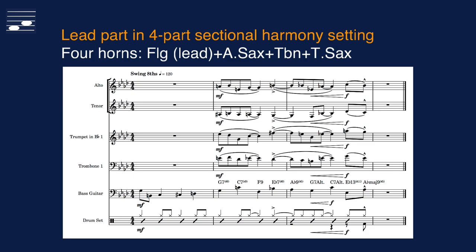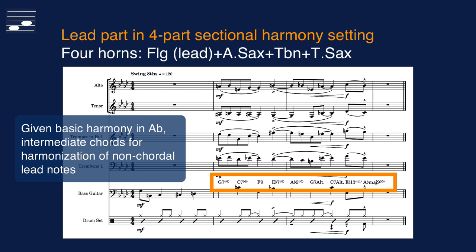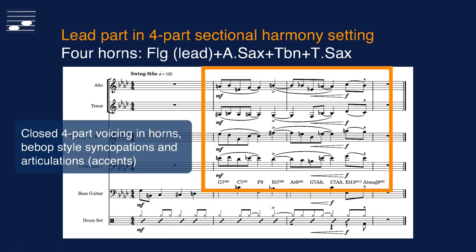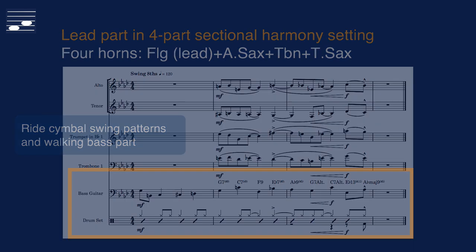We apply a typical bebop swing style to the ten-note series, which becomes the lead part for flugelhorn. The phrase is in the key of A-flat major and for a four-part sectional harmony setting, we must select intermediate chords for harmonization of non-chordal lead part notes. This technique is discussed in my book on arranging. The result is a closed four-part voicing for horns with appropriate phrasing, articulations and dynamics. The rhythm section plays typical swing, walking bass and ride cymbal patterns. Listen to the result.